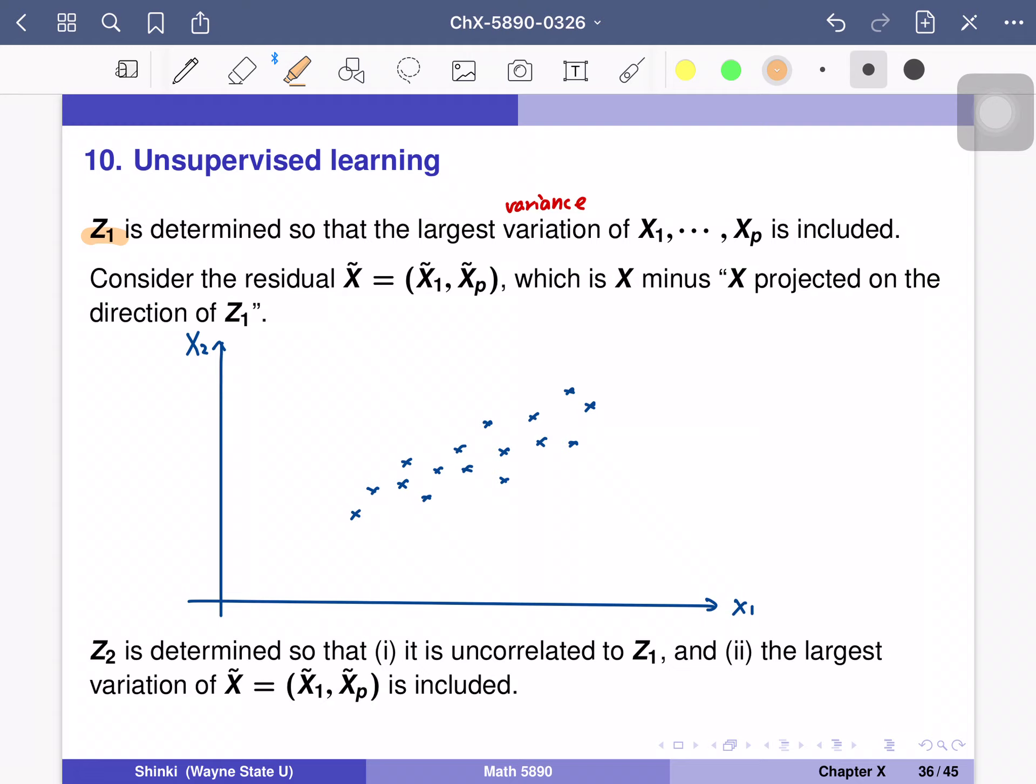I want to explain this by one simple example of p is equal to 2. So suppose observations are distributed like this.